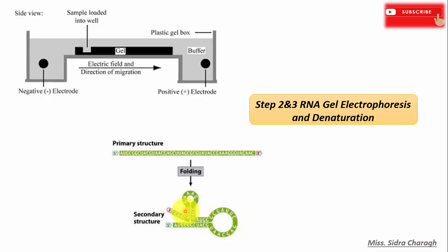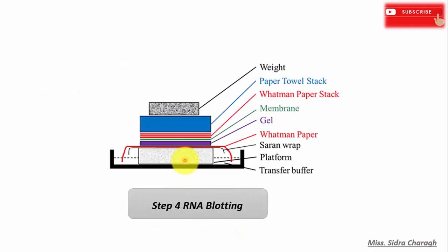To denature RNA molecules, formaldehyde is used as a denaturing agent. In the blotting step, the RNA molecules are transferred from the gel to a suitable solid medium such as a nylon membrane. The method of transfer is similar to Southern Blotting.